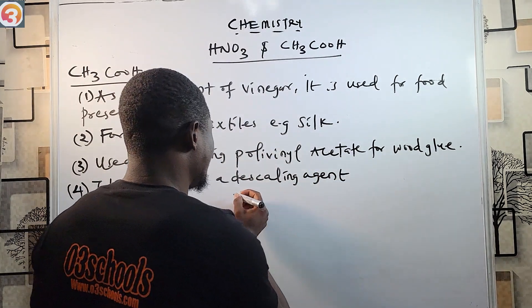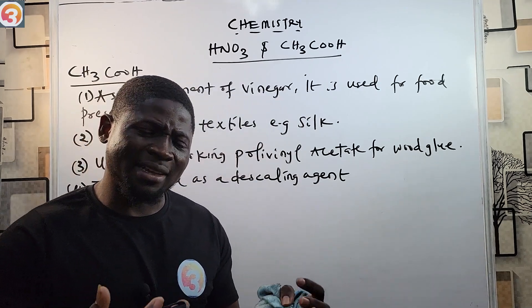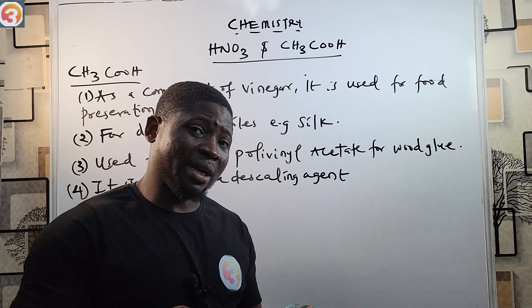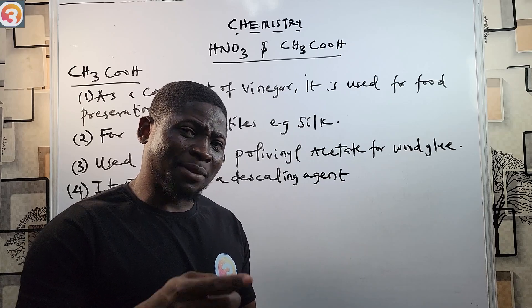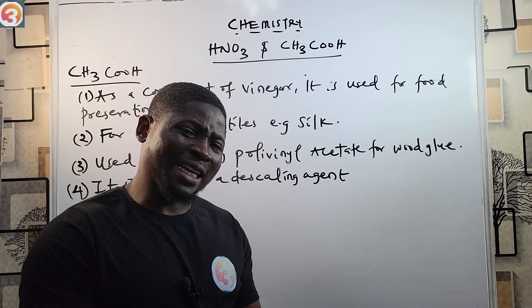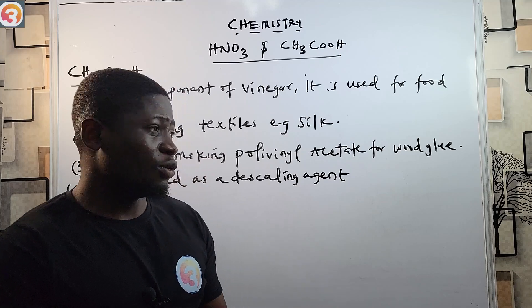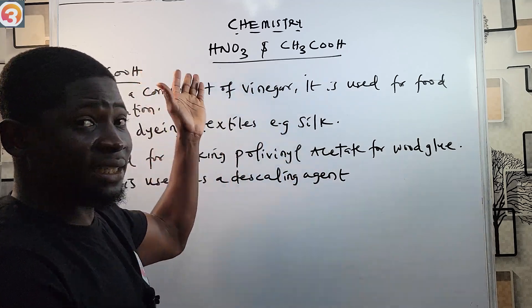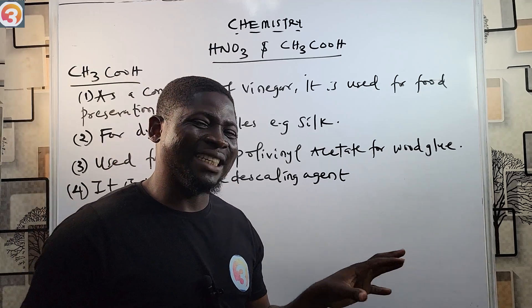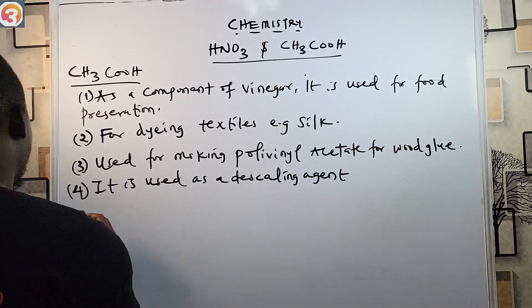Number four: CH3COOH is used as a descaling agent. If you have household appliances that use water — like a kettle or pressing iron — after some time white scale deposits form on them. Ethanoic acid is used to remove those scales, so it is useful as a descaling agent to remove scale from appliances.